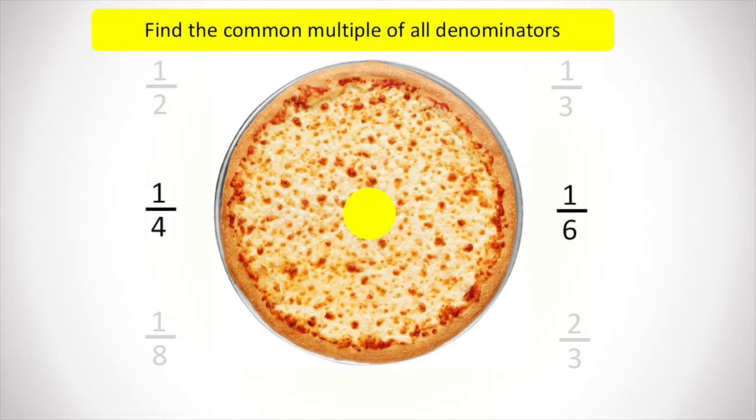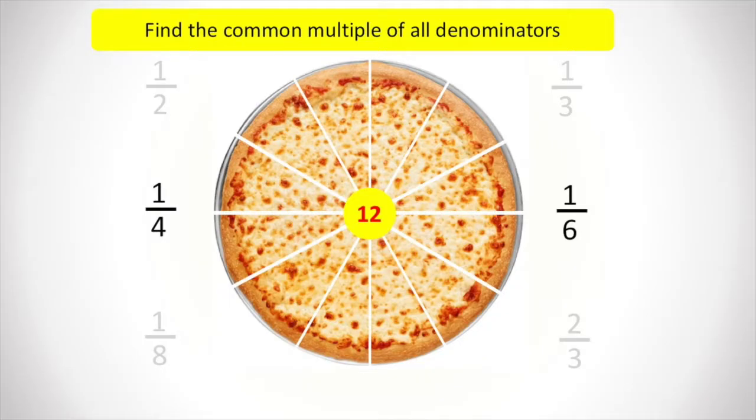Next case, we need to split the pizza into a fourth and a sixth. The lowest common multiple here would be twelve. The one fourth person will get three pieces and one sixth person will get two pieces.